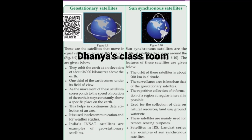In the case of this satellite, at about 900 km in altitude, the repetitive collection of information of a region at regular intervals is possible. This is one of its key characteristics.